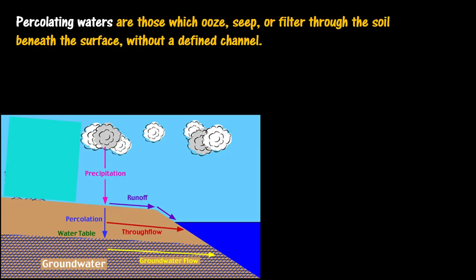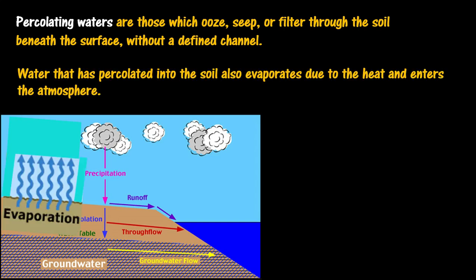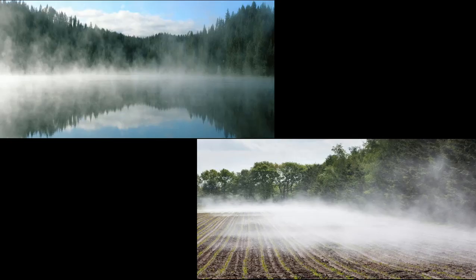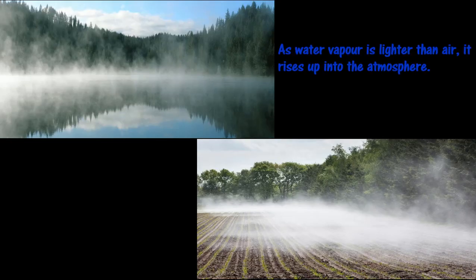Percolating waters are those which seep or filter through the soil beneath the surface without a defined channel. As water vapor is lighter than air, it rises up into the atmosphere.